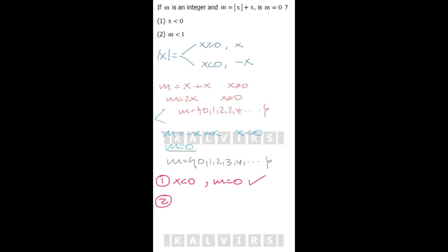The second statement says m is less than 1, and the only possibility for m less than 1 is m equals 0. Then my answer is D. This is another question for Calvers Consulting Corp. Thank you.